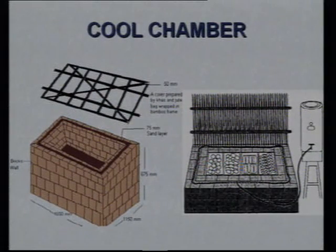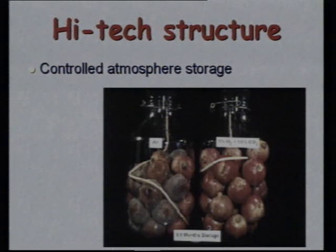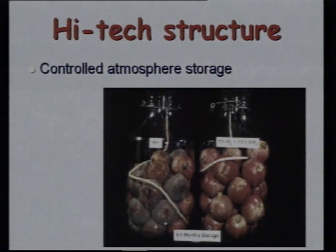The zero energy cool chamber is especially useful in summers when outside temperatures are about 42°C — it can bring down the temperature to about 28°C and maintain relative humidity of about 90 to 95 percent. It is based on evaporative cooling, similar to how an earthen pot cools water — when water evaporates, it leads to a cooling effect. This simple evaporative cooling system is commonly recommended for rural areas. Nowadays agriculture is being commercialized, and high-tech storage structures are also used.